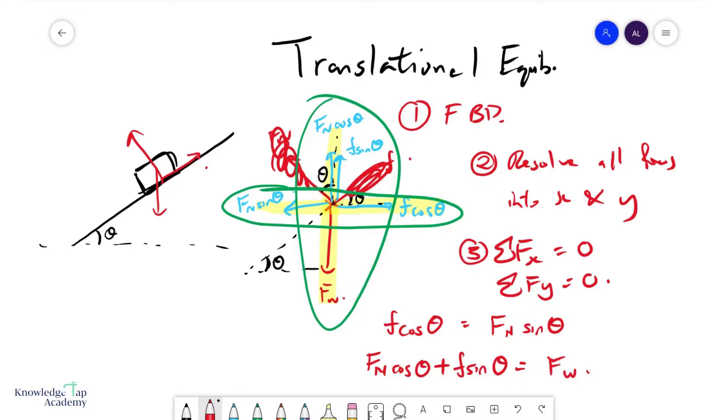And there you have it. Once you have these equations, you'll usually have enough values to substitute in and solve for the unknowns. This is how we systematically study objects in translational equilibrium.